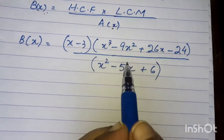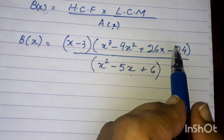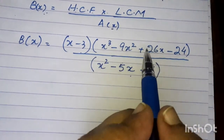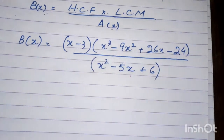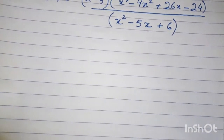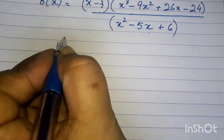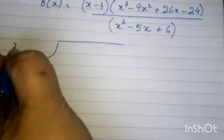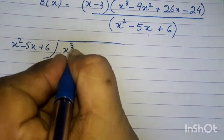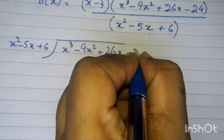We have a common factor in this polynomial, which is one factor. In the LCM, we have the first polynomial as one factor. So what we need to do is completely divide. We need to divide x squared minus 5x plus 6 into x cubed minus 9x squared plus 26x minus 24.